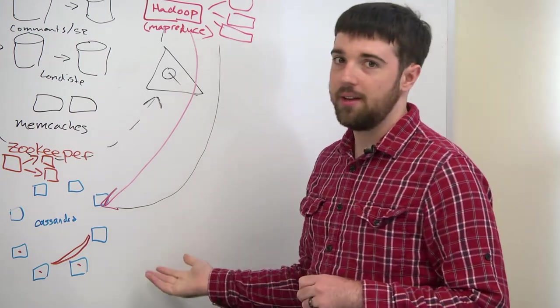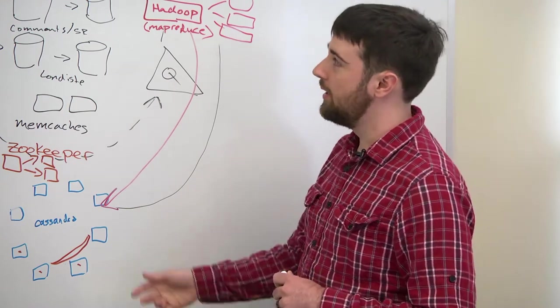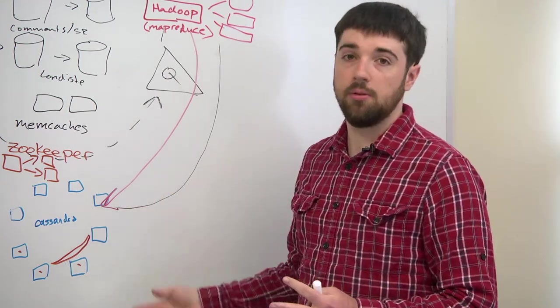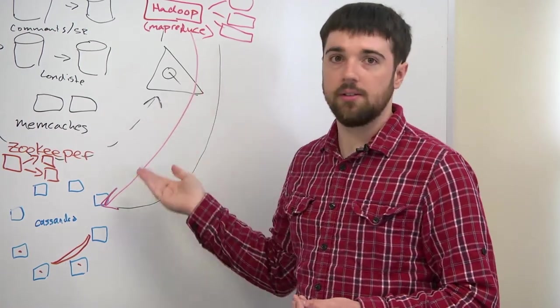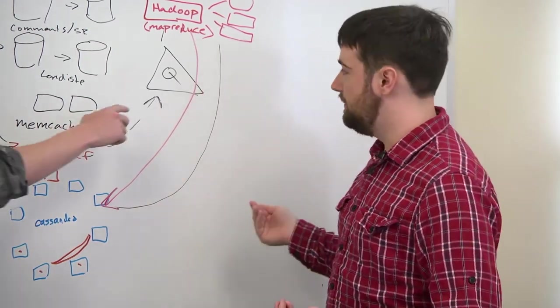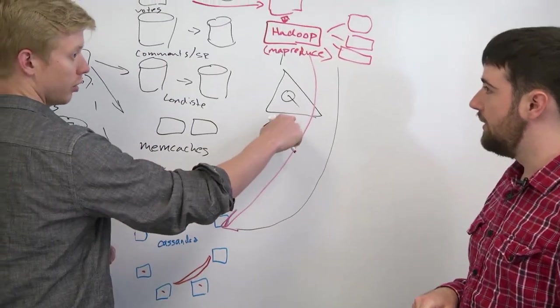An example of that biting us recently, we have these vote queue processors. All they do is they get that queue item that says that somebody's cast a vote. So you basically have a set of machines that are reading from this.